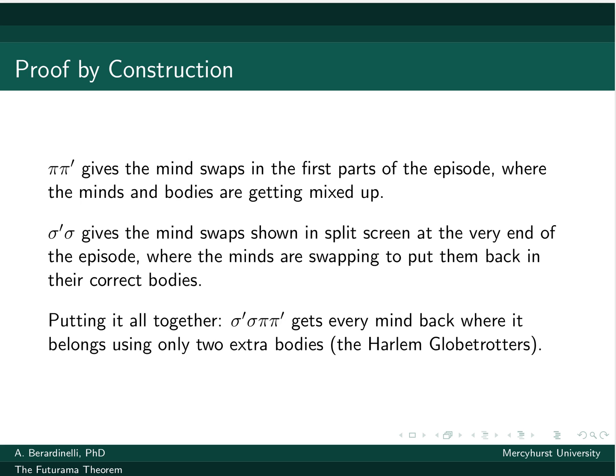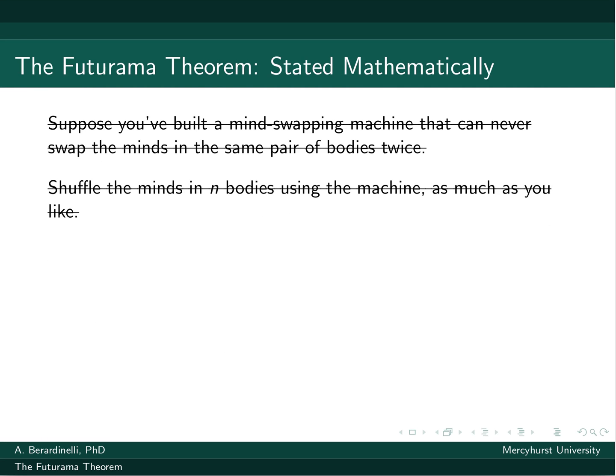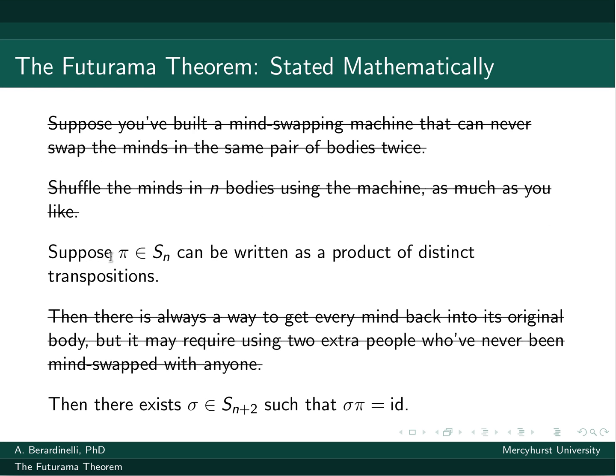But putting it in a context that isn't pure symbols, which can be a little scary. So this slide here, the mathematical statement, suppose π in Sn could be written as a product of distinct transpositions, then there exists σ in Sn plus 2, such that σ times π is the identity. If I had tried to explain that to you a week ago, you might not have had any idea what any of these words meant, and you wouldn't have necessarily cared. Why do we care that we can create this σ? So they built this story of the mind-swapping machine around this mathematical idea to show one science fiction-y way in which you might care.